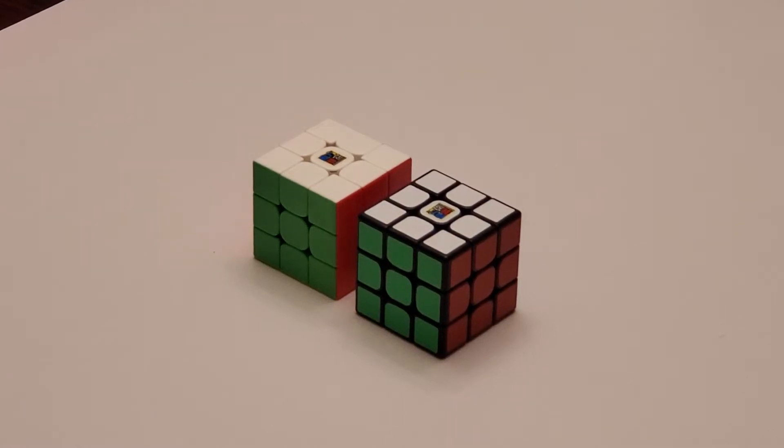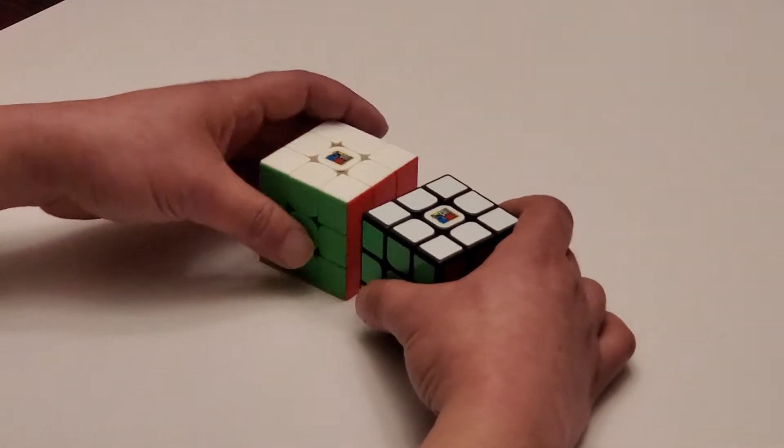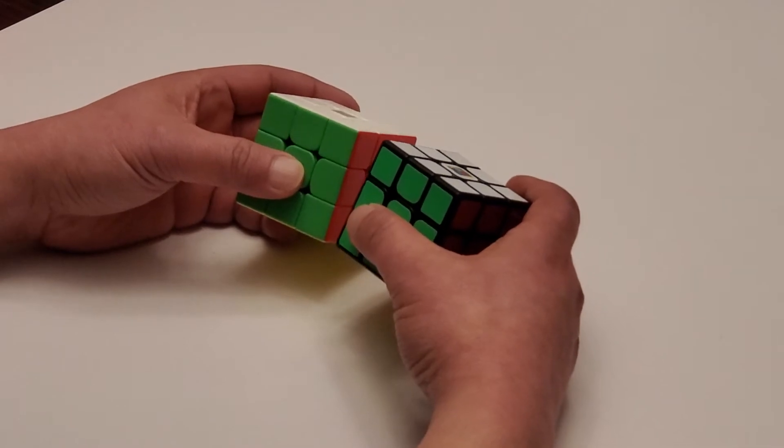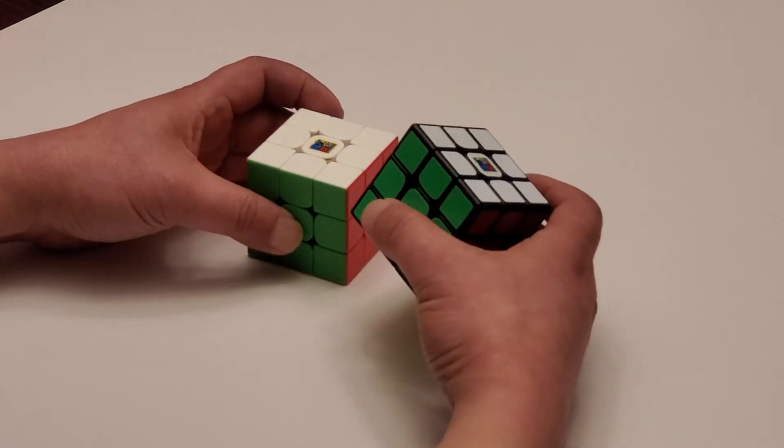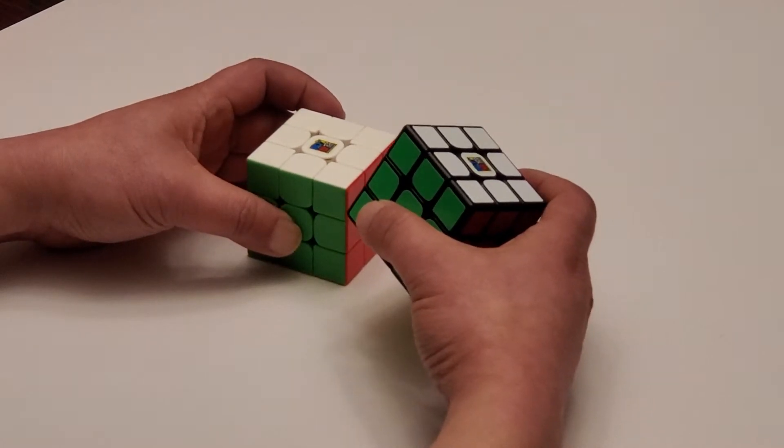Hey fellow Cubers, welcome to another Speedcube Cat video. In my previous video, I weighed a handful of black and stickerless Moyu RS3M2020s. The stickerless weighed at 86 grams as expected, while the black unexpectedly weighed 3 grams more at 89 grams.